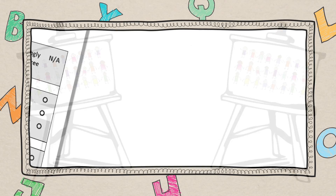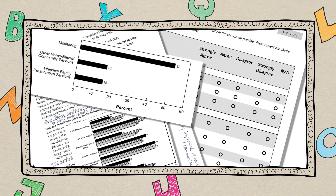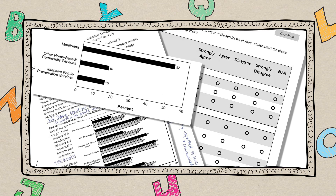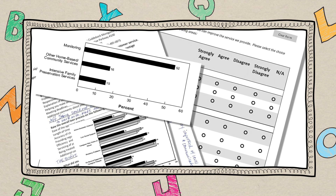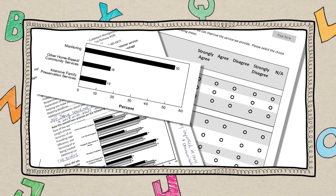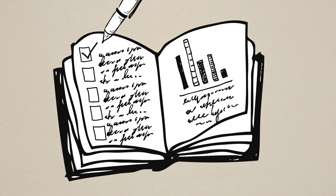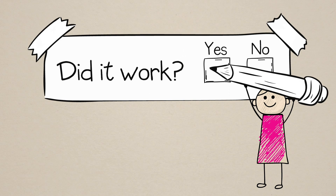Additional components of a rigorous evaluation effort include the selection of valid and reliable tools, such as surveys and assessment instruments, to measure change in children and families, as well as systematic procedures for collecting data.